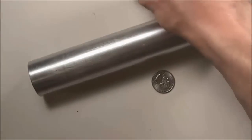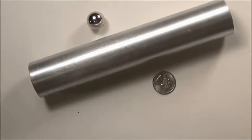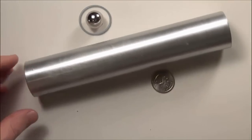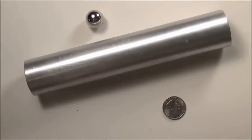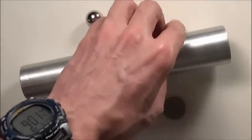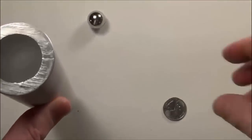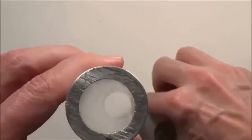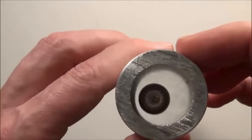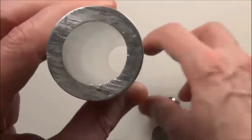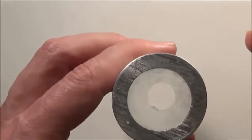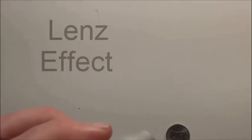Let's take a look at Lenz's Law in a little different context. We're going to take a thick aluminum tube and drop a really strong magnet down it. When that magnet falls down the tube, we're going to be creating electricity and a magnetic field. I'll start by dropping a quarter down the tube just to show you how quickly it falls — and now the magnet. So the magnet creates that electricity and that magnetic field that slows the fall of the spherical magnet. It's called the Lenz effect.